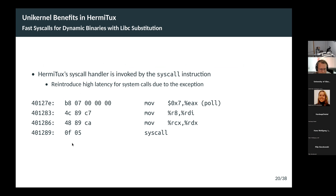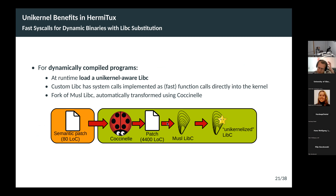To bring back fast system calls: if you decompile an application and look at how syscalls are done, you'll see the syscall identifier moved into RAX, followed by the syscall instruction — which is an interrupt, making it a slow system call. For dynamically compiled programs, we have a custom libc that is loaded into the address space and the program dynamically links against it. Most system calls are made by the libc, so we have a custom libc modified not to make traditional syscalls but to make fast function calls directly into the kernel. We achieve this by automatically transforming the musl libc using Coccinelle.